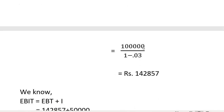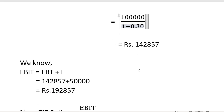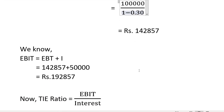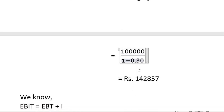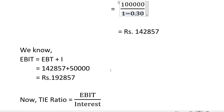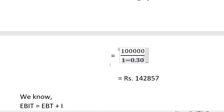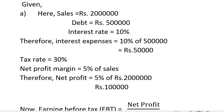Since TIE equals EBIT divided by interest, we work from net profit back to EBIT. The interest expense is 10% of 50,000, which equals 5,000. Working through the calculation, the EBIT comes out to approximately 142,000. Now we will calculate the actual TIE ratio.